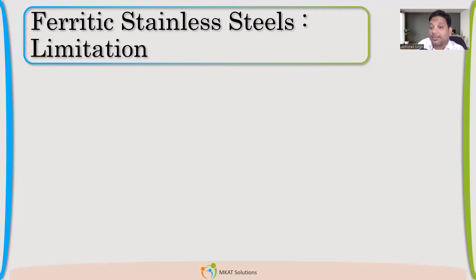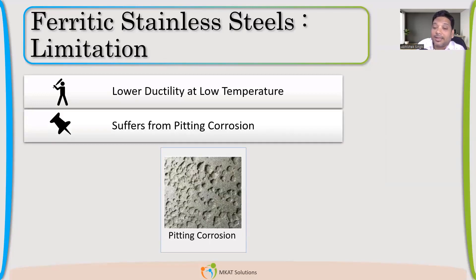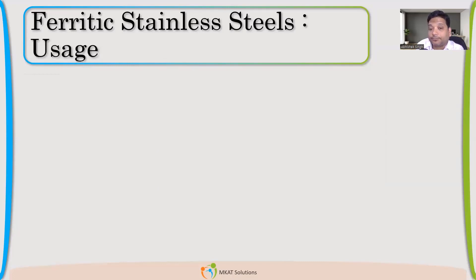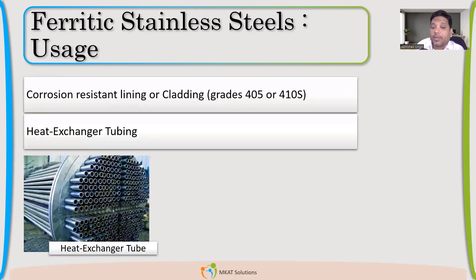The limitations include lower ductility — they are not as ductile as austenitic steels — and they suffer from pitting corrosion, which is a very common phenomenon with ferritic steels. Common applications include corrosion-resistant lining or cladding and heat exchanger tubing.